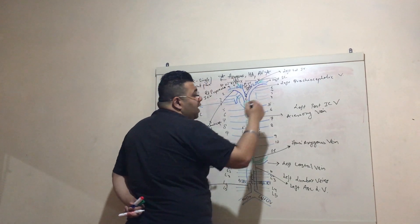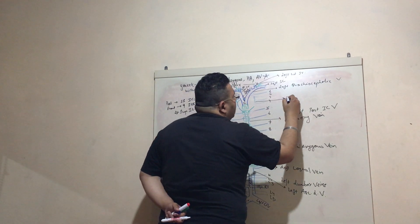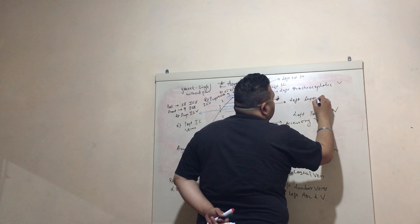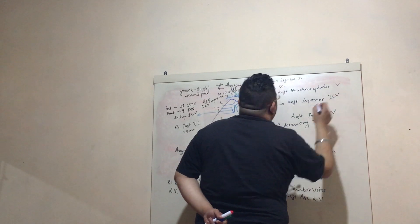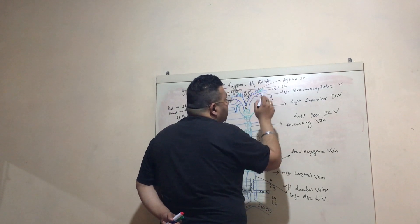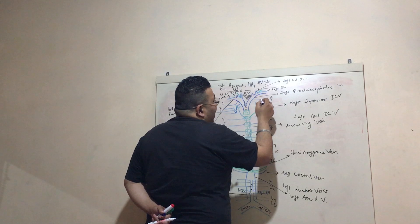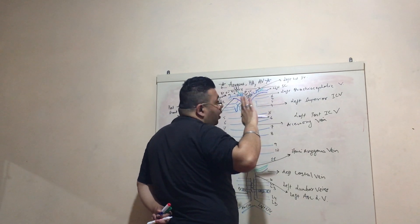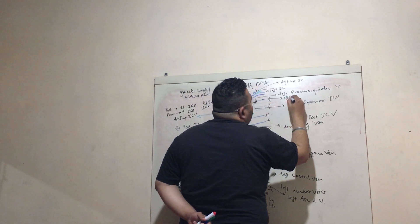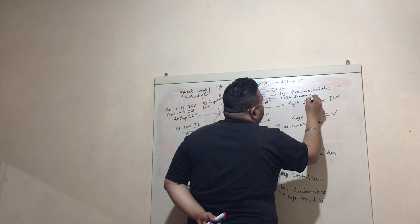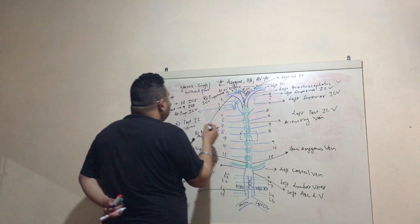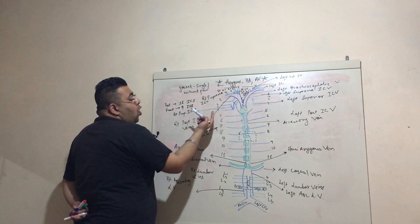The 2nd, 3rd, and 4th left posterior intercostal veins drain into a single structure known as the left superior intercostal vein, which drains into the brachiocephalic vein. The 1st left posterior intercostal vein drains alone into the brachiocephalic vein and is known as the left suprema intercostal vein.